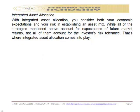The next one is integrated asset allocation. With integrated asset allocation, you must consider both your economic expectations and your risk in establishing an asset mix. While all the strategies mentioned above account for expectations of future market returns, not all of them account for the investor's risk tolerance. Integrated asset allocation includes elements of all previous strategies, accounting not only for expectations but also for actual changes in capital markets and your risk tolerance. However, it cannot include both dynamic and constant weighting allocation simultaneously, since an investor would not wish to implement two strategies that compete with one another.